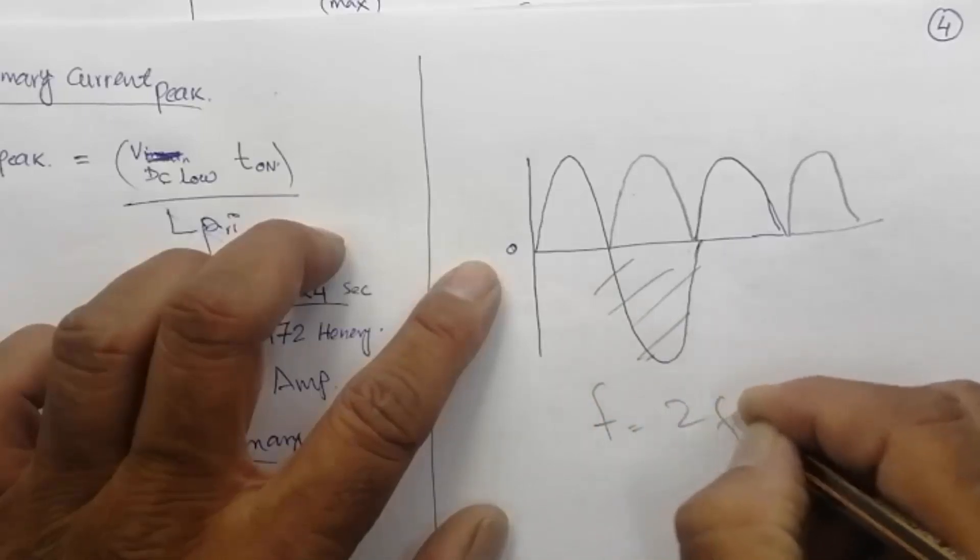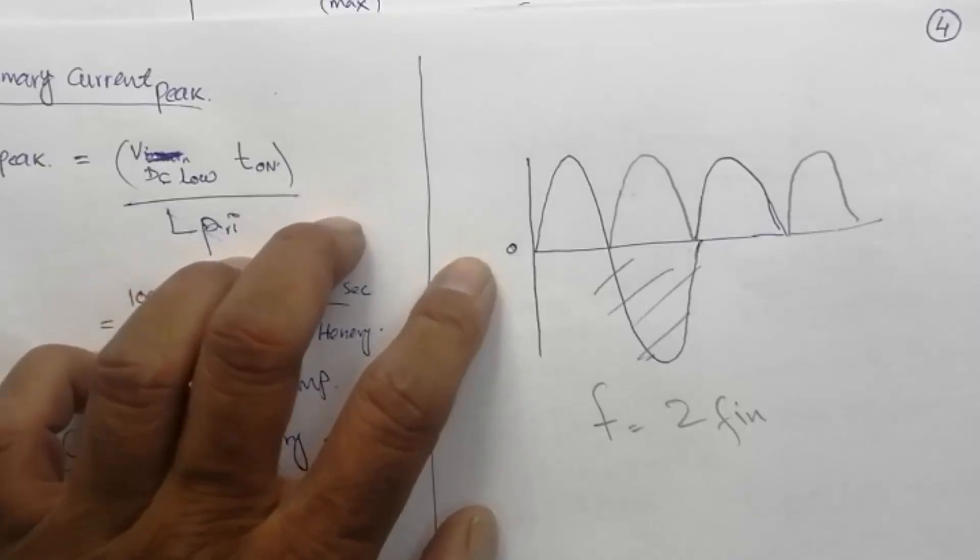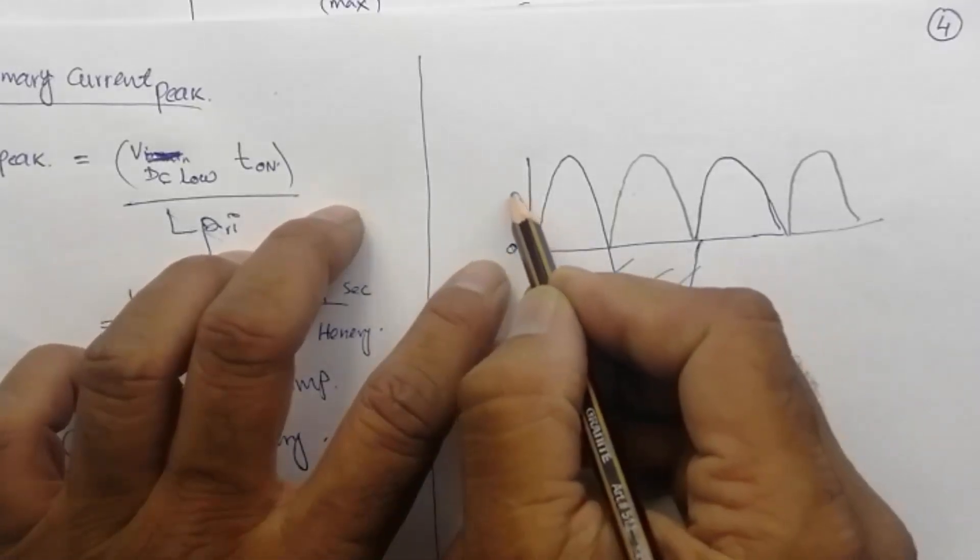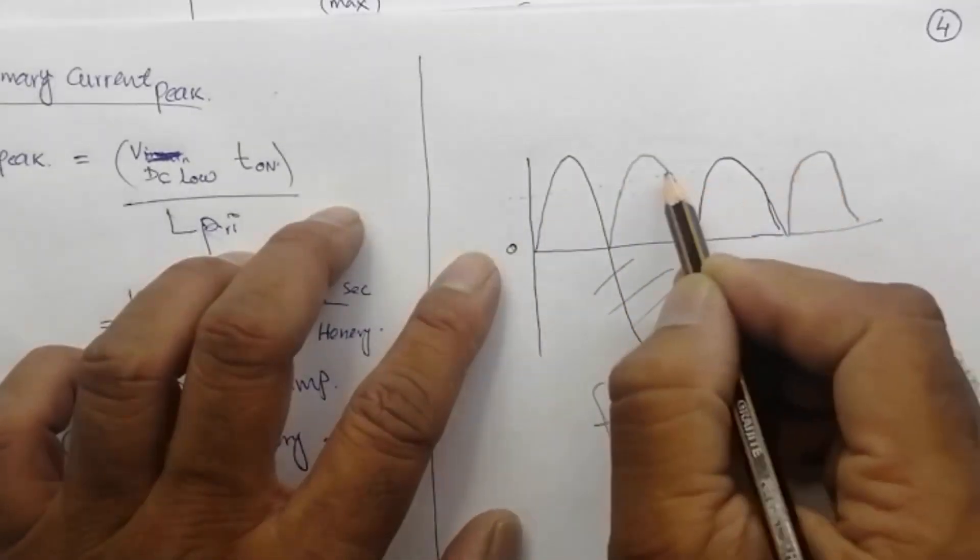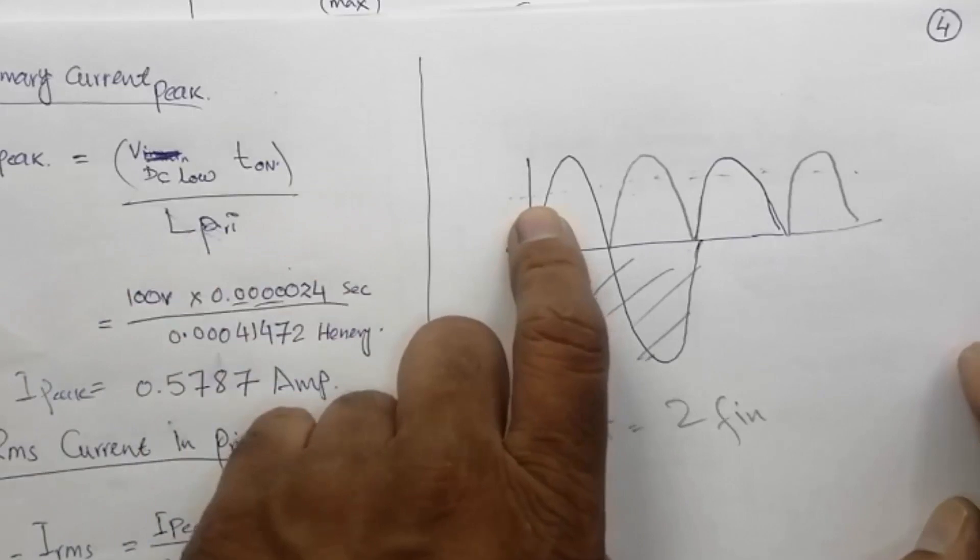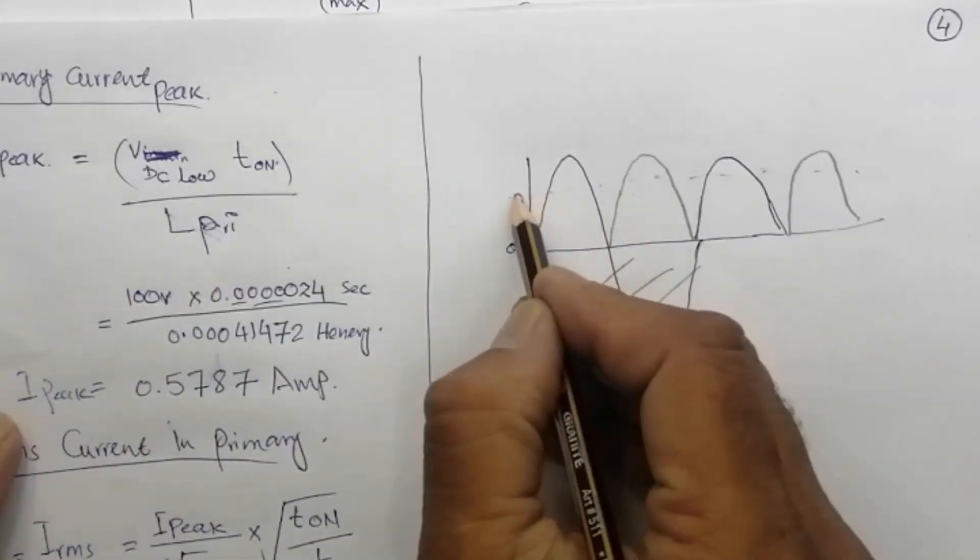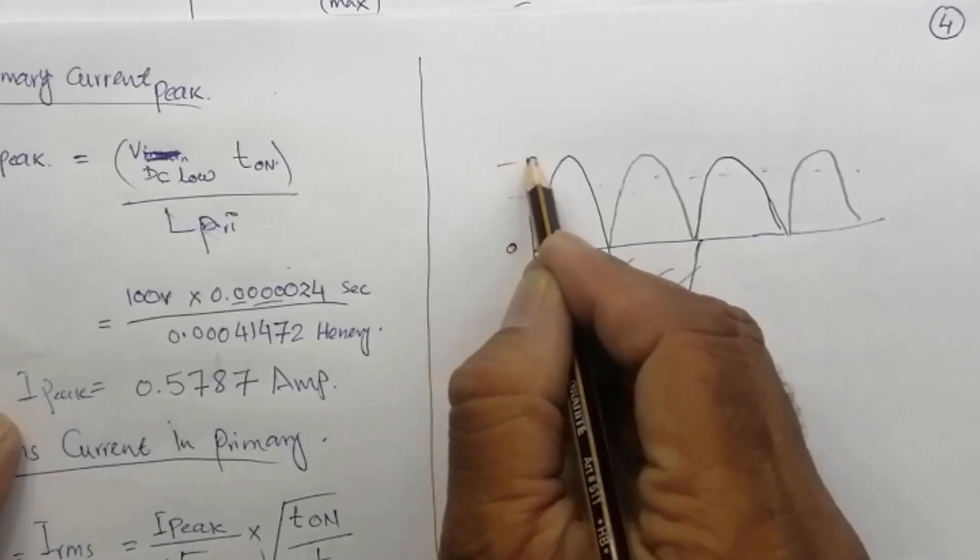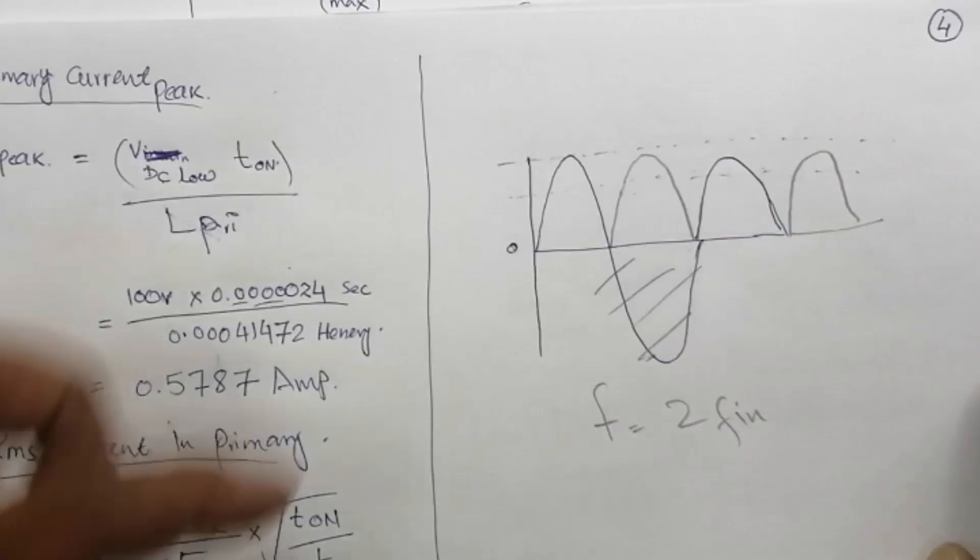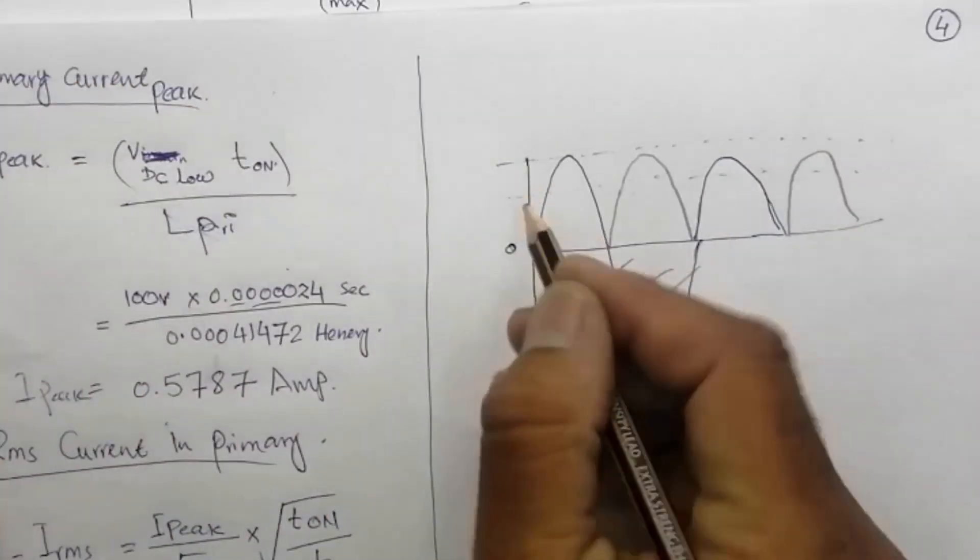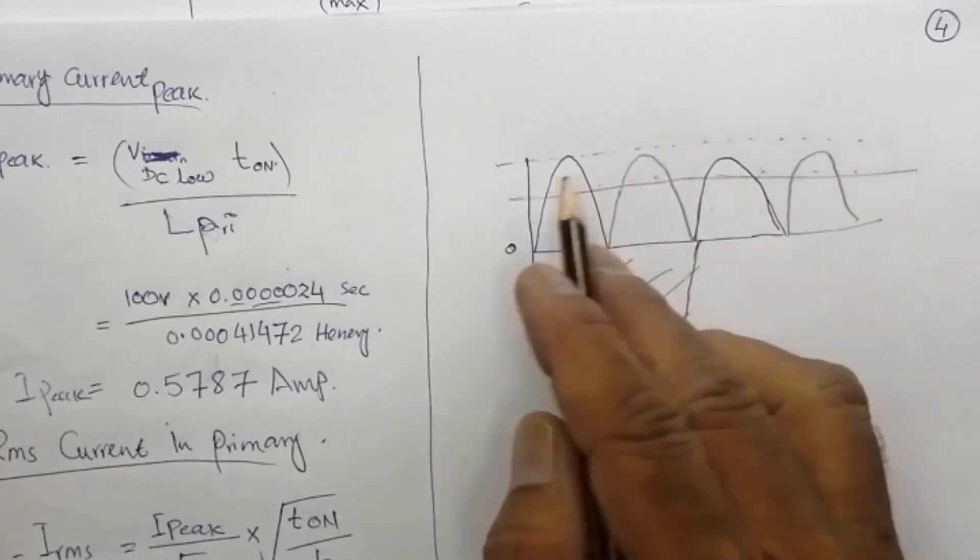So here the frequency will be 2f. Now the RMS value will be here, but in our calculation when we select a bulk capacitor, we take the top level, the highest peak.